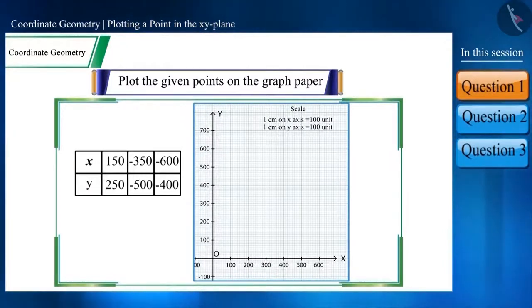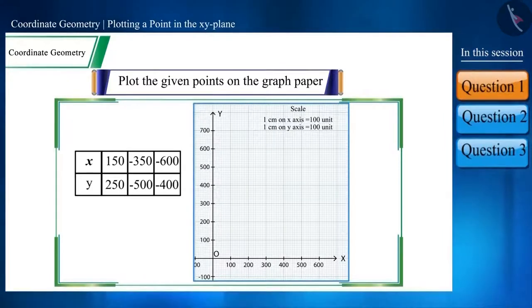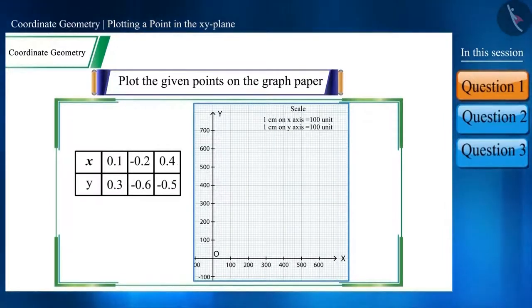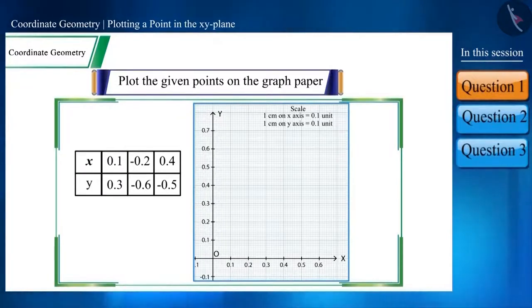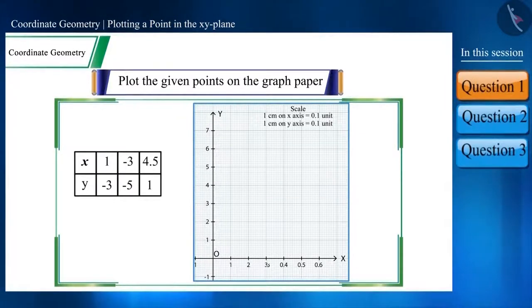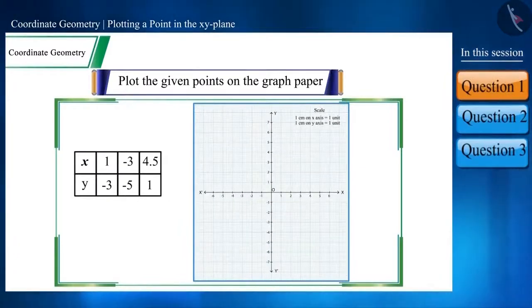Can you tell me what we would have done if these points or numbers were in decimals? Then we would have taken 1 centimeter equals to 0.1 unit. We will write numbers here taking 1 centimeter equals to 1 unit.